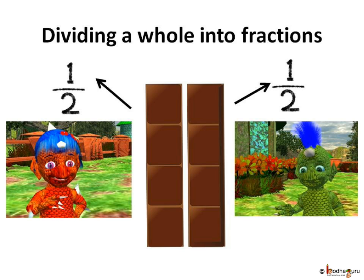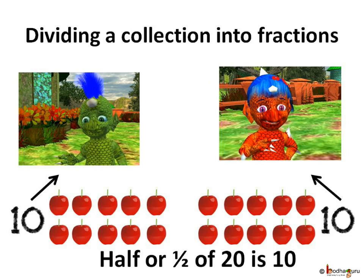But when dividing a bunch of cherries among two children, we give half a bunch to each child. Each gets half of the total number of cherries.